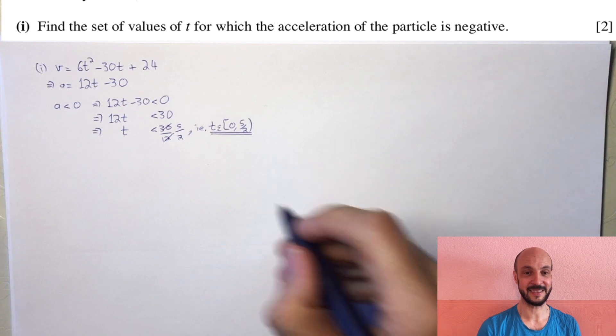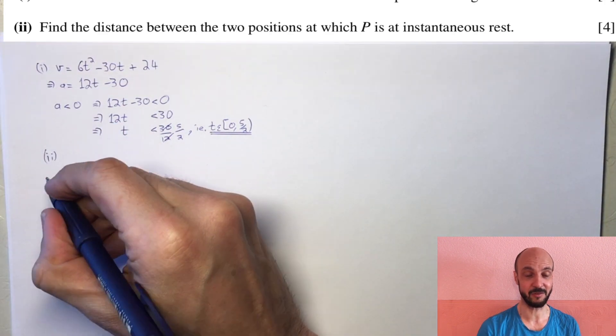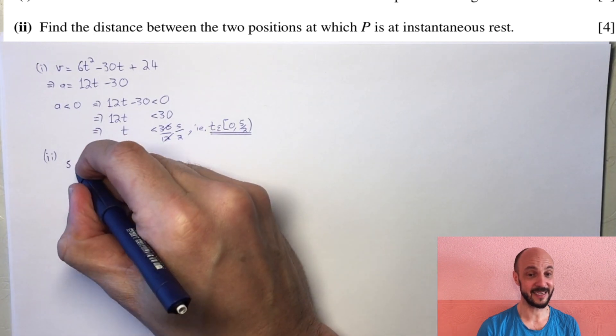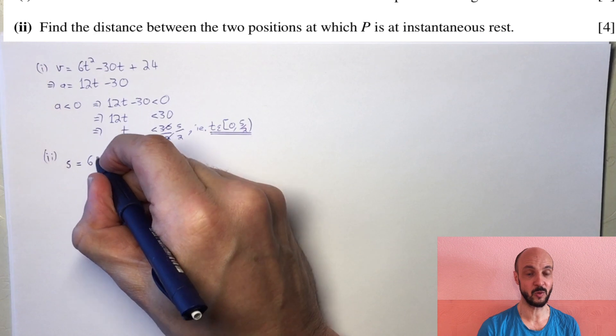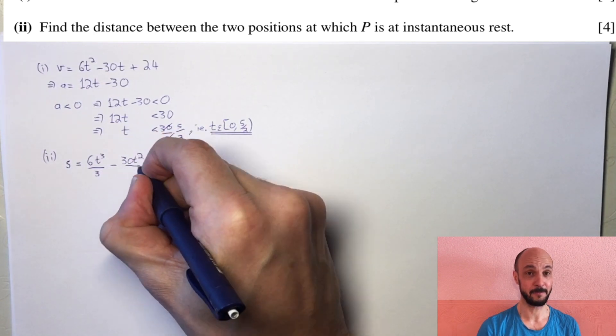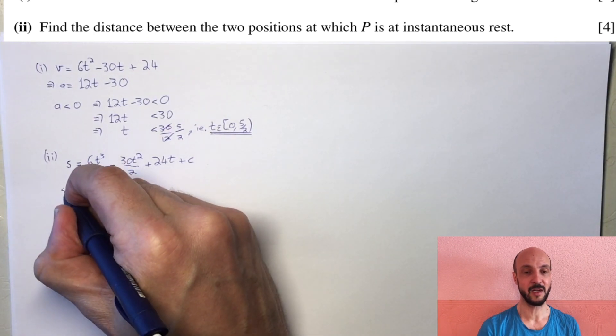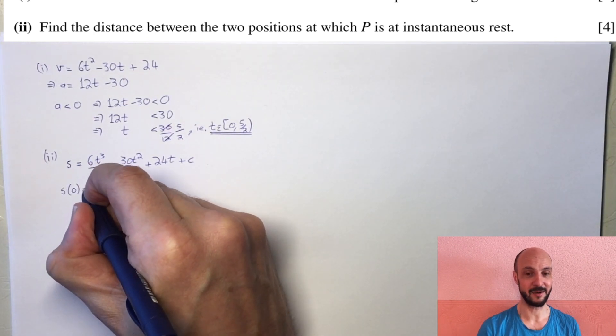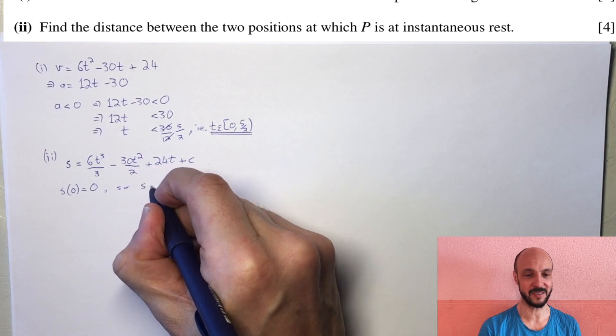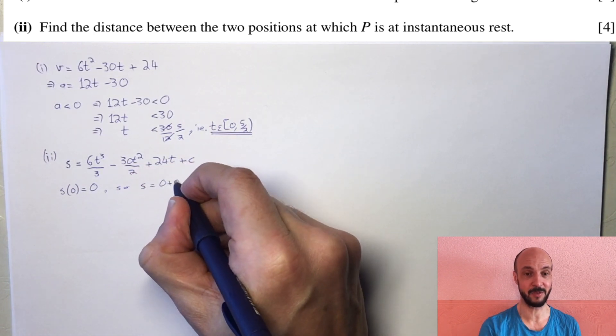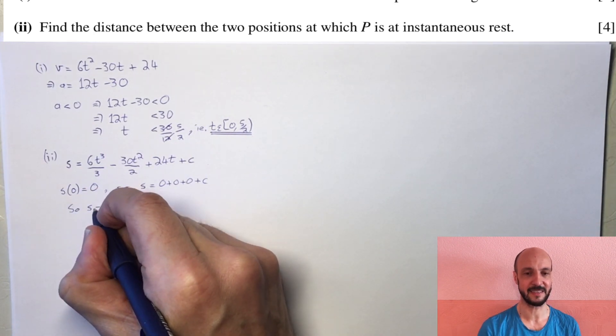We're told that v is 6t squared minus 30t plus 24, so integrating we get s equals 6t cubed over 3 minus 30t squared over 2 plus 24t plus C. At time equals 0 the position equals 0, so substituting gives us 0 equals C, meaning the constant is 0.